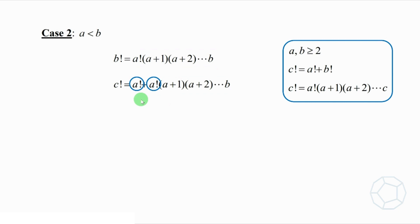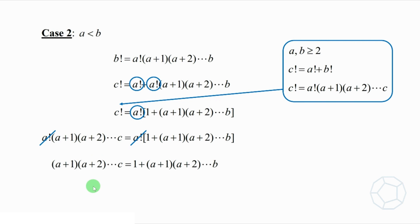Take out the common factor a factorial. We have c factorial equals a factorial times [1 plus (a+1) times (a+2) all the way up to b]. Using this equation of c factorial, we put the two expressions together like this. Cancel out a factorial on both sides, we get a simpler product.